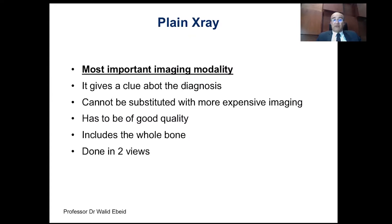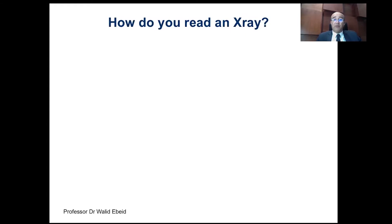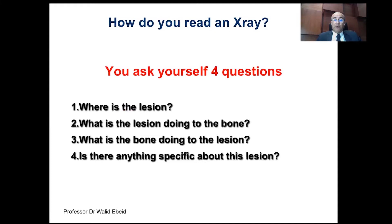After finishing the clinical evaluation, we have to evaluate the X-ray of the patient. It should be of good quality and done in two views. There is no substitute for a good quality X-ray to diagnose a patient with a bone tumor — you can't just rely on an MRI. To interpret an X-ray, you ask yourself four questions: Where is the lesion? What is the lesion doing to the bone? How is the bone responding? And is there anything specific about this lesion?